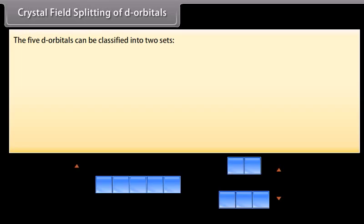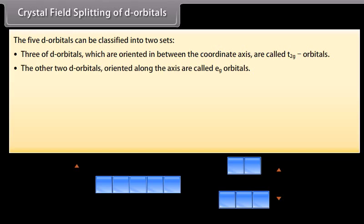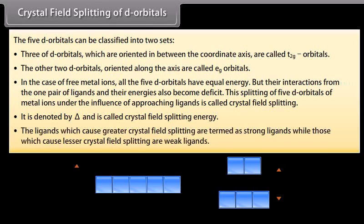Crystal Field Splitting of d Orbitals: The five d orbitals are classified into two sets. Three d orbitals oriented between the coordinate axes are called t2g orbitals; the other two oriented along the axes are called eg orbitals. In free metal ions, all five d orbitals have equal energy, but under the influence of approaching ligands their energies split. This splitting is called crystal field splitting and is denoted by Δ (crystal field splitting energy). Ligands causing greater splitting are strong field ligands; those causing lesser splitting are weak field ligands.